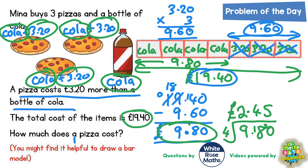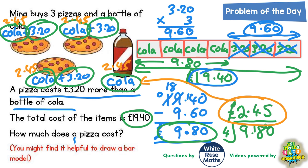But if we go back to the original question and replace all the bottles of cola with £2.45. So this one is worth £2.45, this cola is worth £2.45, £2.45 for this one, and £2.45 for this one. Don't forget what we said right at the start. A pizza is the same as a bottle of cola plus an extra £3.20.